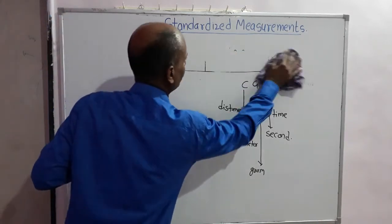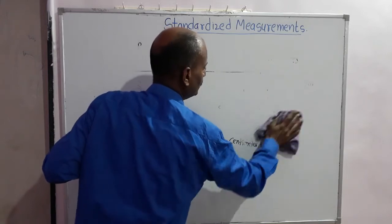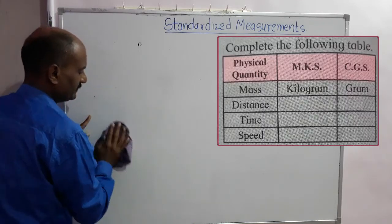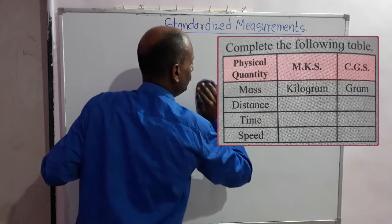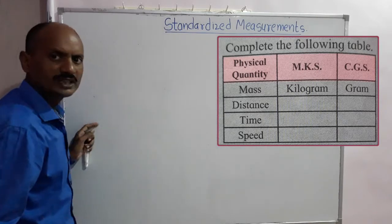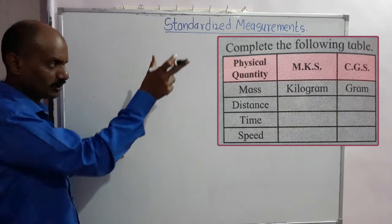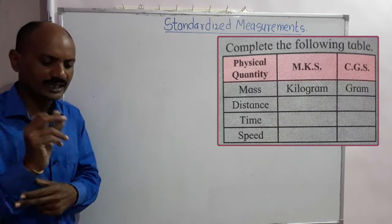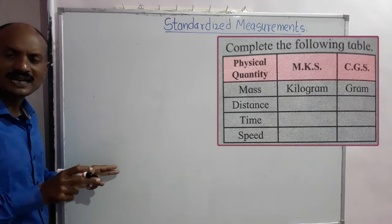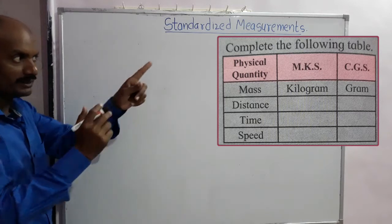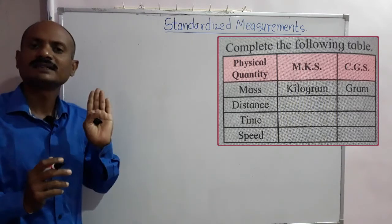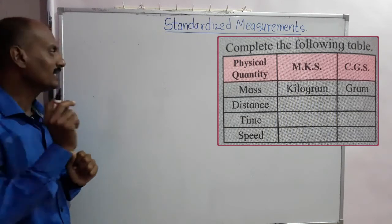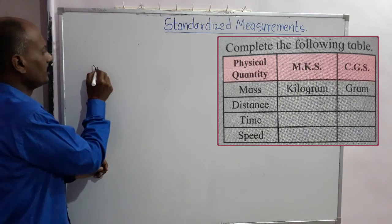Now, we have a chart to complete. In this chart, we compare measurements in the MKS and CGS systems. The first column is the physical quantity, the second column is the MKS system unit, and the third column is the CGS system unit.